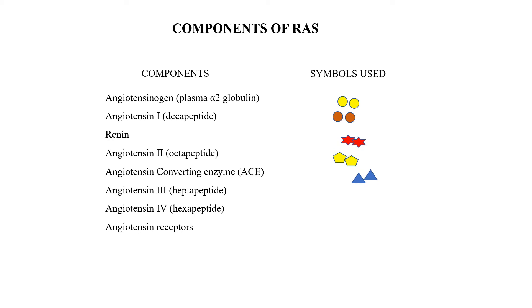Considering circulatory RAS, the components are as follows. Angiotensinogen is a plasma alpha-2 globulin precursor for angiotensin 2. Angiotensin 1 is an inactive decapeptide whose biological potency is one-hundredth that of angiotensin 2, and it is rapidly converted into angiotensin 2 in the presence of angiotensin converting enzyme.